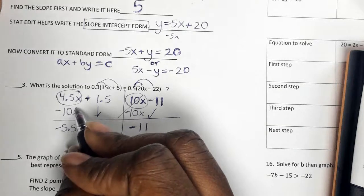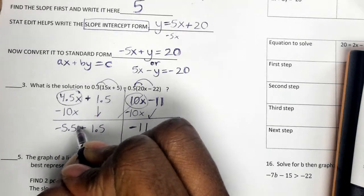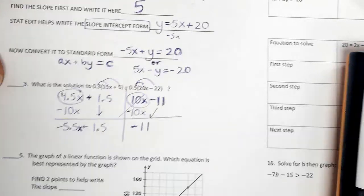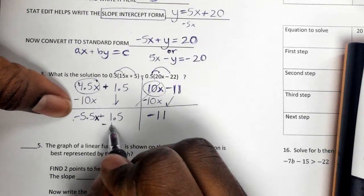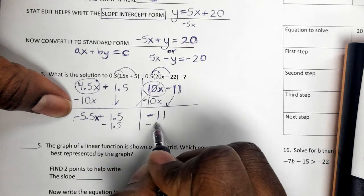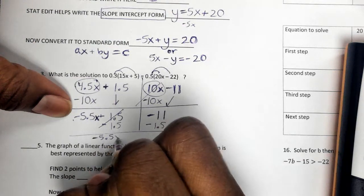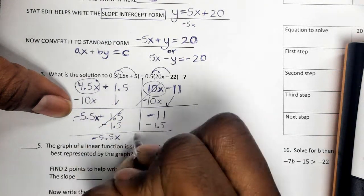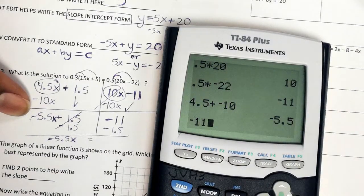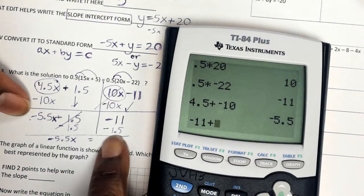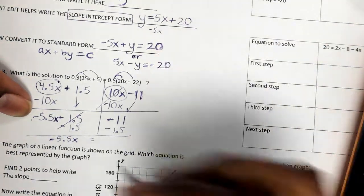Wait a minute. I also forgot something here. That should have had an x with it. I see that mistake happen a lot. Please don't make that mistake. Now that the x's are all over here, I've got to do the opposite of this so I can start isolating the x variable. So that's negative 5.5x. I'm just bringing that one down. Now I've got to add those two. Negative 11 plus negative 1.5 and that's a negative 12.5.